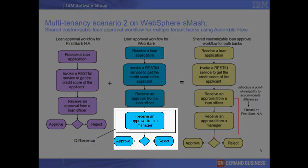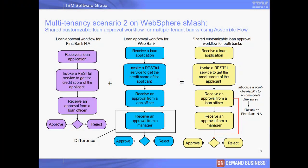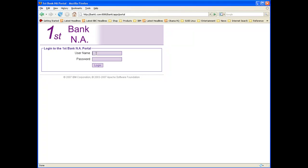These workflows differ only in one additional step for WebBank — receiving an approval from a manager. We combine these two workflows into a single shared workflow by introducing a parameter called tenant ID, and using this parameter to conditionally bypass this additional step for First Bank NA customers. Next, we will show how we invoked this workflow from a portlet and applied some tenant-specific configurations for each of the tenant banks.